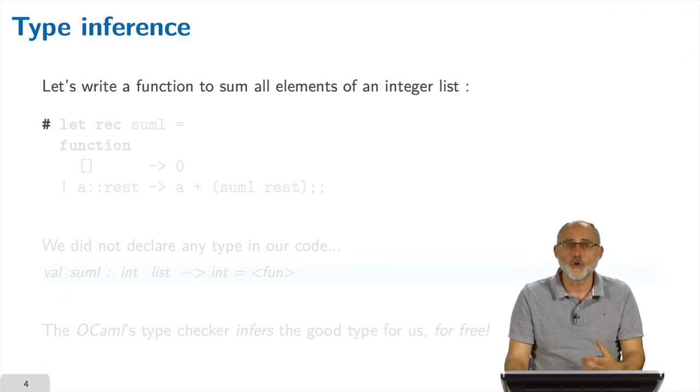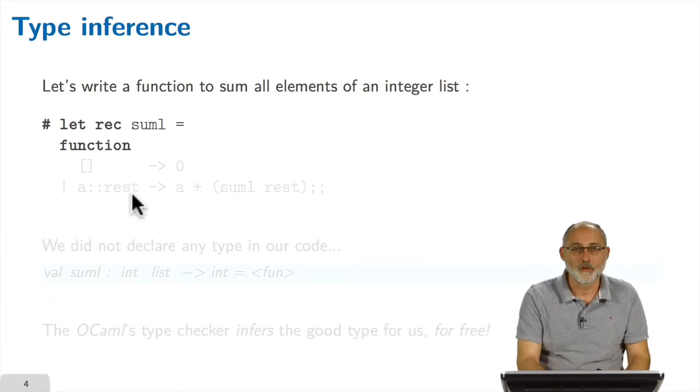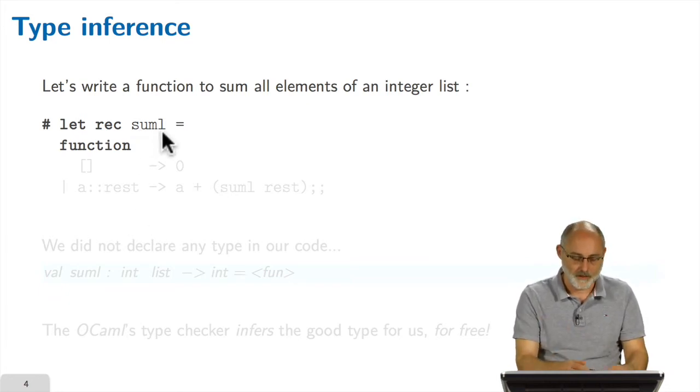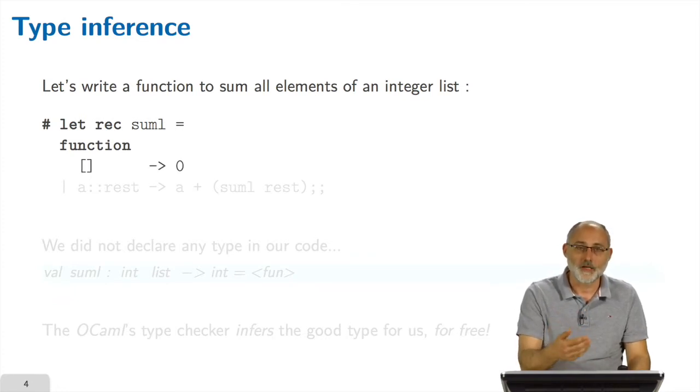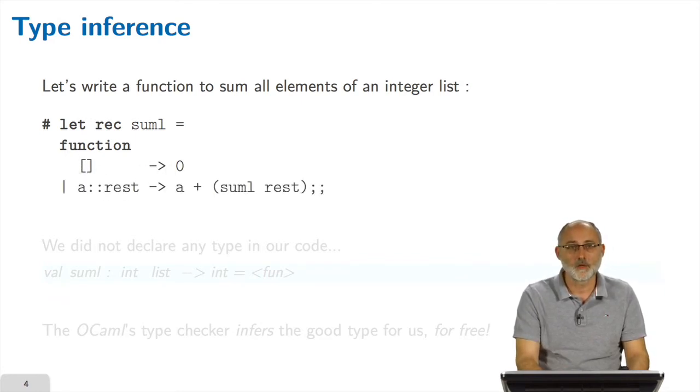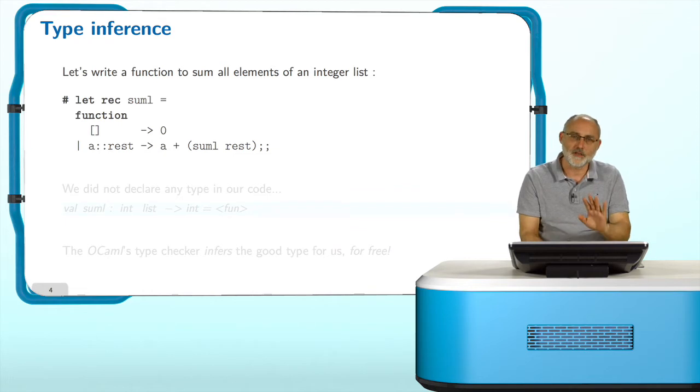Let's write a function now to sum all the elements of an integer list. So we define a function, which is called sumL, sum of the element of the list. And we use what is called pattern matching to define the function by cases. We say, if the list that has been given to me is empty, then the result will be zero. Else, if it is not empty and you have the shape of having a first element and the rest, then the result will be taking the first element and adding it to the result of summing the elements of the rest of the list.